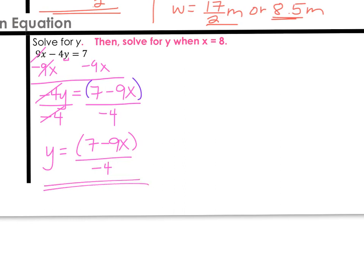It says then solve for y when x equals 8. For that second part, we'll plug in 8 for our variable. y equals 7 minus 9 times 8. And that all goes in parentheses. Divided by negative 4. Again, you can do this part. Pause the video, simplify this, and leave your answer as a simplified fraction.